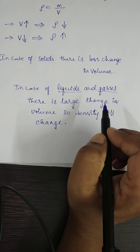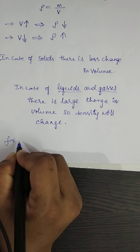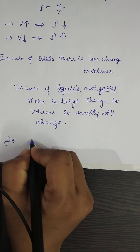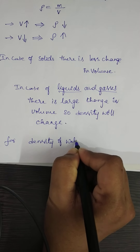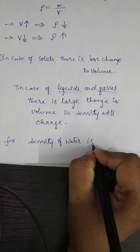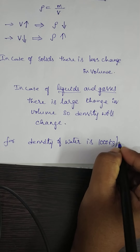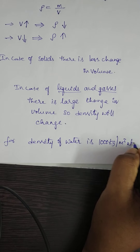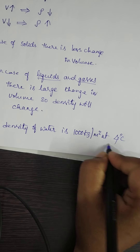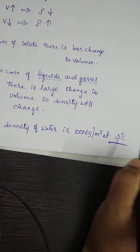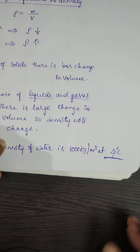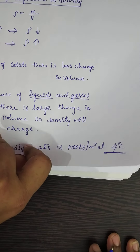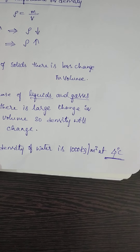In the case of liquids and gases, there is a large change in volume, so density will change significantly. Therefore, when talking about the density of liquids and gases, we must mention the temperature. For example, the density of water is 1000 kg per meter cube at 4 degrees Celsius. I hope you like the video — please do like, share, and subscribe. Thank you for watching.